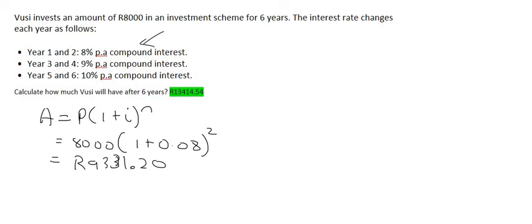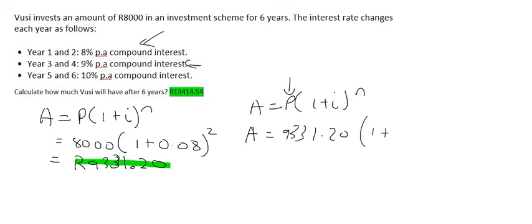So now you can use the same formula, but now his starting amount is 9,331 Rand and 20 cents. So we can go 9,331.20 where the interest rate is now going to be 9%. So that's 0.09, and that's going to be for another two years as well. And so the total is now going to be 11,086 Rand and 40 cents.